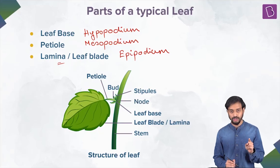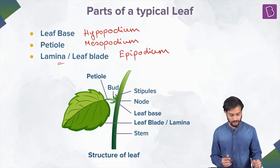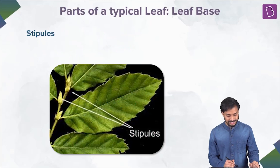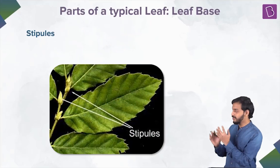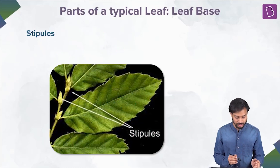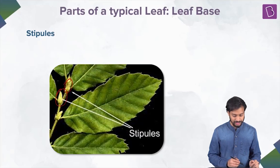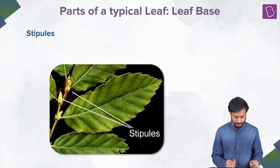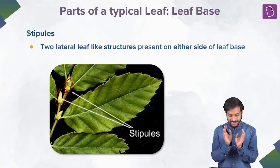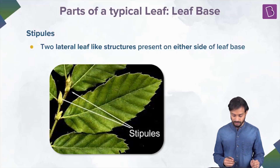So this is the node — you know the node at this point of time, we've talked about it a lot. Let's take a real-life example. This is a picture which is actually a very true picture — an actual image. So the stipules — can you see the leaf-like structures over here? These are the stipules. Two lateral leaf-like structures present on either side of the leaf base — those are the stipules.